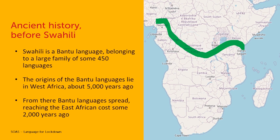Before looking at the history of Swahili proper, it's worthwhile going back a bit further and looking at the pre-history of Swahili — the ancient history. It was said some time ago in the 19th and early 20th century that Africa didn't have history, but there's plenty of history in Africa. One of these histories is the history of the Bantu languages. Swahili is a Bantu language belonging to a large family of some 450 languages, and the origins of this family lie in West Africa, in today's Cameroon.